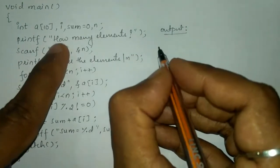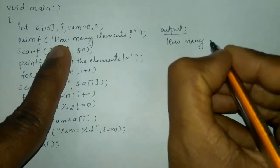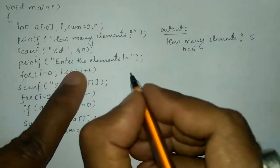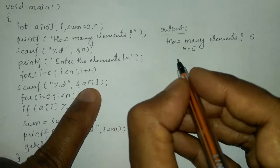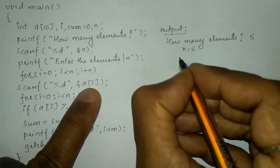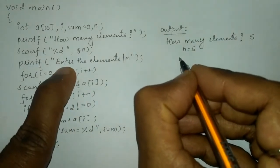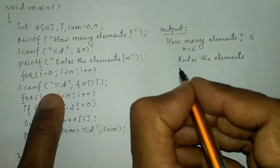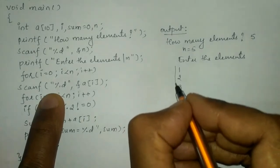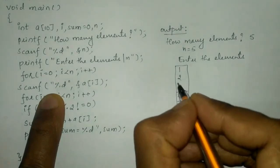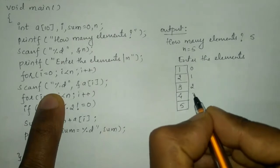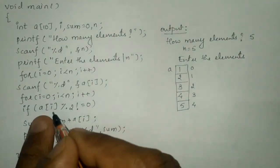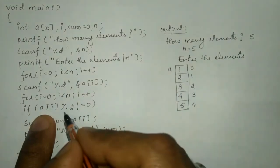Once we compile and run this program it is going to ask how many elements. I am going to enter 5, so n receives value 5. Then it will say enter the elements and using the for loop iteration we receive elements one by one. I will enter 1, 2, 3, 4, and 5. In memory this will form consecutive memory blocks whose index numbers are 0, 1, 2, 3, 4, and the name of the array is a.